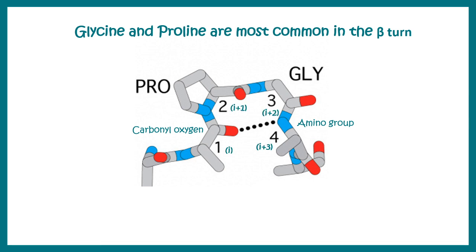Here the four residues are named as i, i plus one, i plus two, and i plus three where there is a hydrogen bond that exists between the carbonyl oxygen of the ith residue and the amino group of i plus third residue and this is major for the stability of this beta turn.